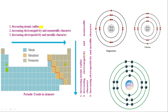The second trend going down a group: decreasing electronegativity or non-metallic character — so the metallic character increases as we come down a group. The third trend: increasing electropositivity, meaning increasing metallic character. So the second and third points here are essentially one thing — as we go down a group, the metallic character increases.